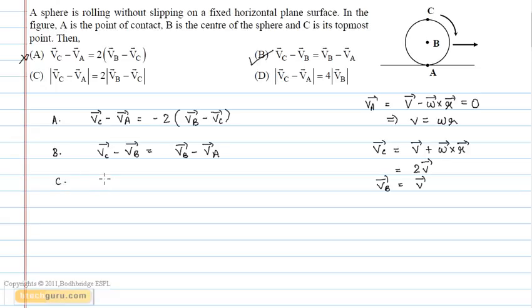The modulus of Vc vector minus Va vector equals twice the modulus of Vb vector minus Vc vector. Since the mod of Vc minus Va equals 2V and the mod of Vb minus Vc equals V.